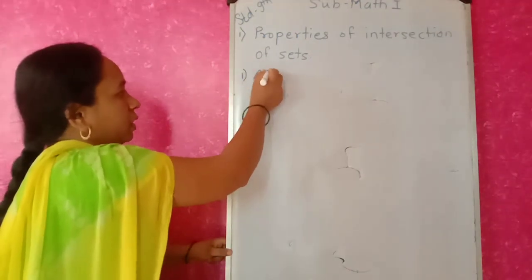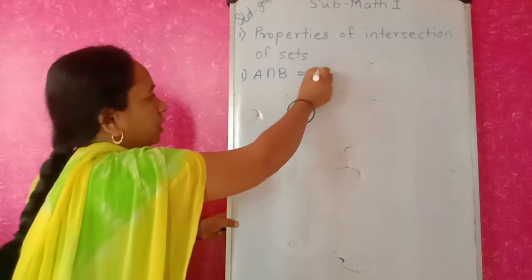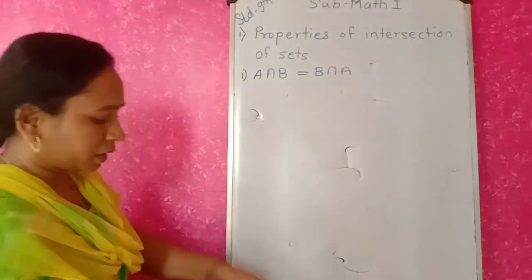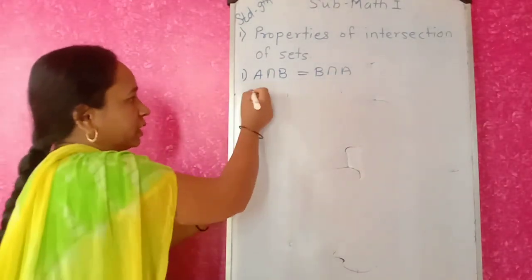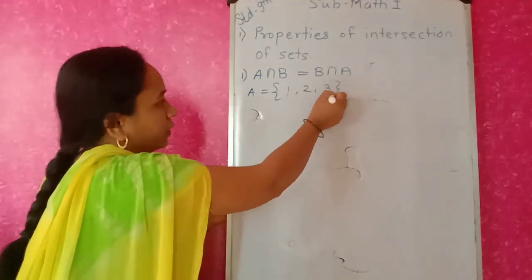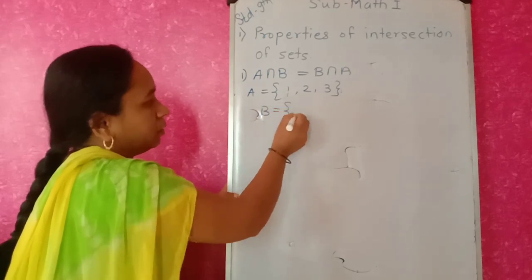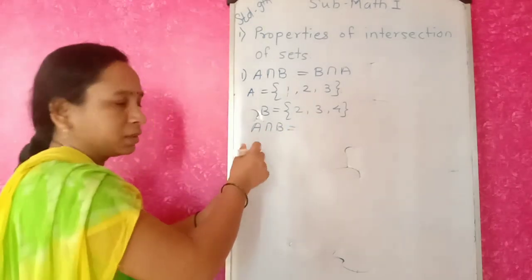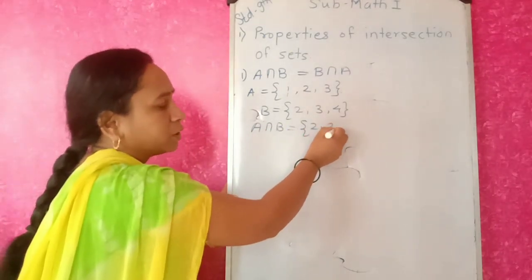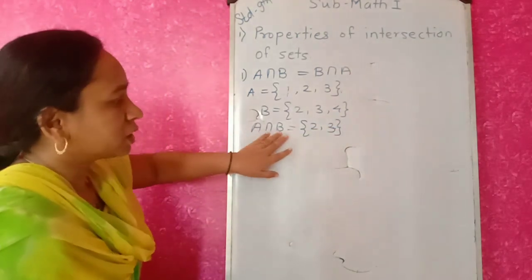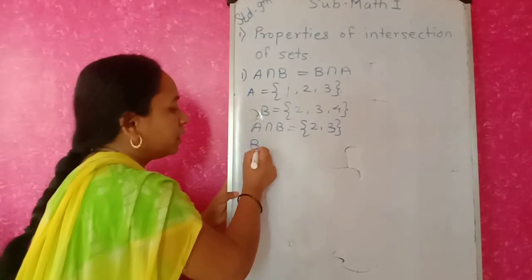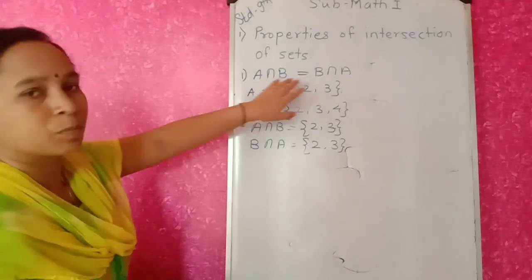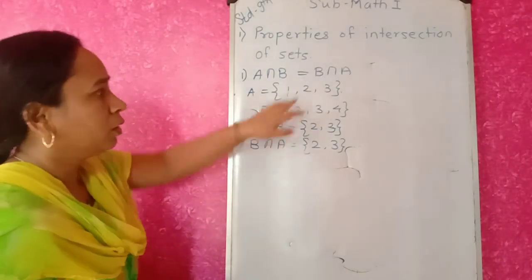The properties of intersection of sets are given on page number 12. The first property is: A ∩ B = B ∩ A. We will verify this with an example. Take A = {1, 2, 3} and B = {2, 3, 4}. A ∩ B gives the set of common elements: {2, 3}. If I reverse it, B ∩ A also gives {2, 3}. Therefore A ∩ B = B ∩ A. This is the first property — intersection is commutative.